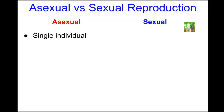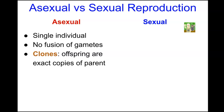There are two reproductive methods. Asexual reproduction involves a single individual with no fusion of gametes — gametes being the sperm and egg. When reproducing asexually, the offspring are going to be clones, meaning exact copies of the parent, and because it is a female giving birth to these clones, the offspring will also be female.